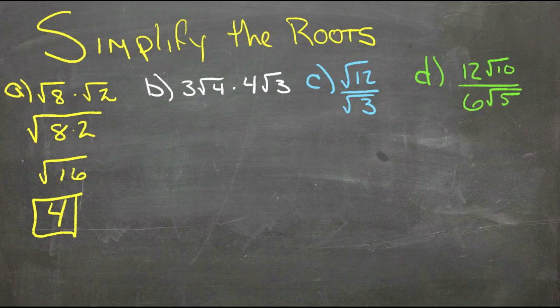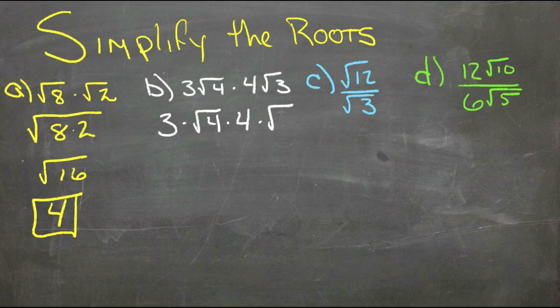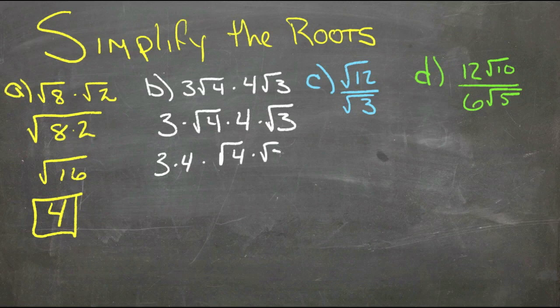The second one here, we have 3 roots of 4 times 4 roots of 3. This can be read as 3 times root 4 times 4 times root 3. So now we can use our commutative law and move things around a little bit. So we have 3 times 4 times root 4 times root 3.